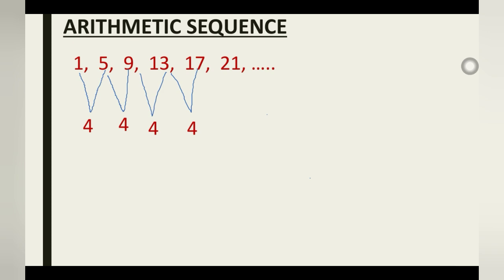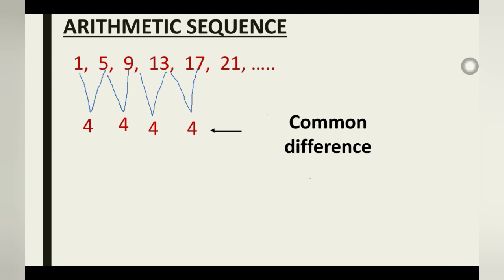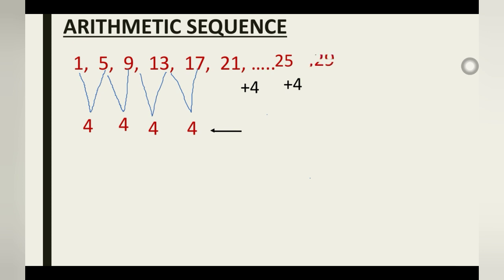Anytime you have a sequence that follows a particular pattern and you realize there's a common difference between each preceding term, then that sequence is arithmetic. The name given to this constant value — 4 — is the common difference. The terms that follow keep having 4 added, so to find the term after 21, we just add 4 to get 25; add 4 to 25 to get 29, and so on.